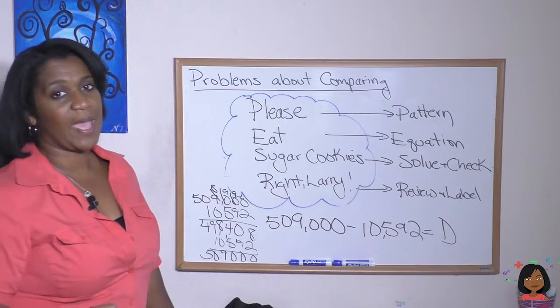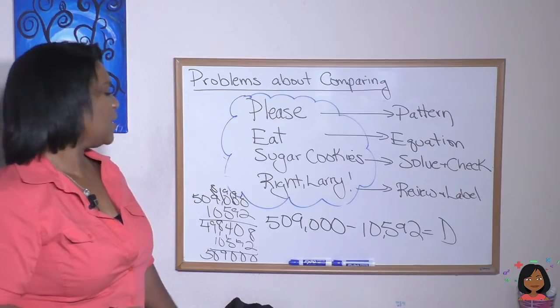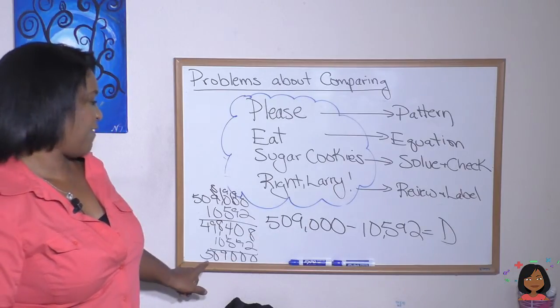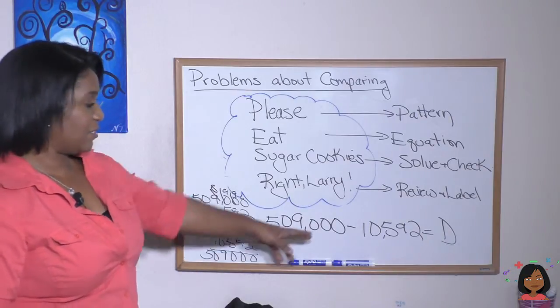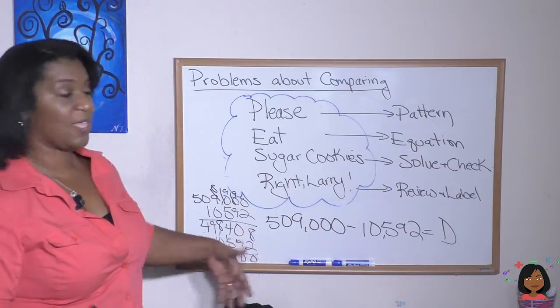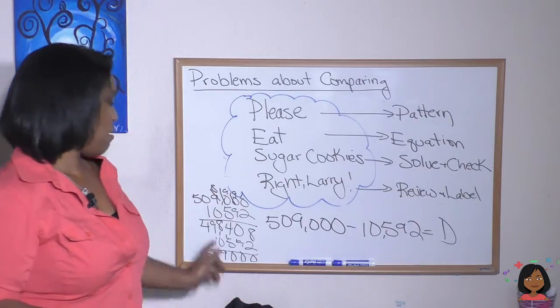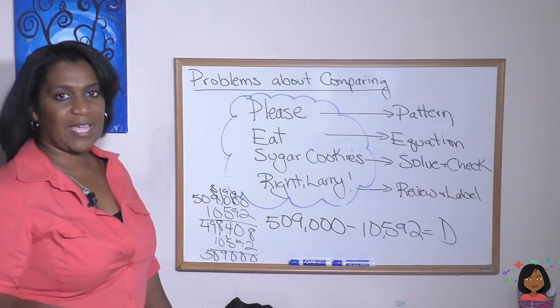And the last one is review and label. Well, does that make sense? I mean, it's 500, excuse me, 498,000. Yeah, because this is only 10,000. This was in the 100,000s, 500,000. So that makes sense.